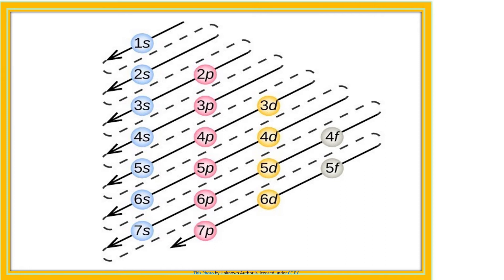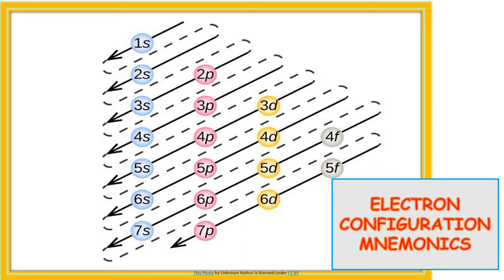Are you familiar with this? Now, take a look at your screen. This is your electron configuration mnemonic device. I want you to take a look at your screen and be familiar with this. As you can see, there are arrows that you have to follow in order to write the correct electron configuration of a certain element.